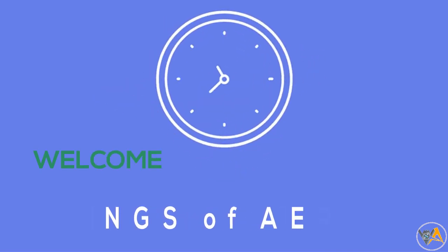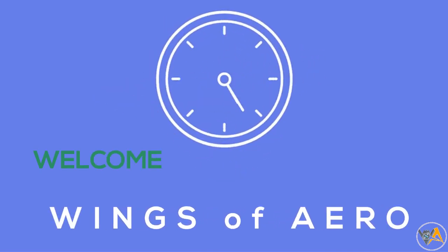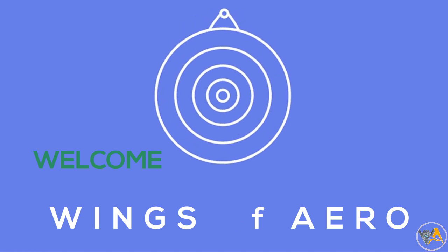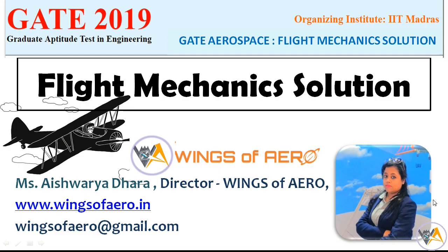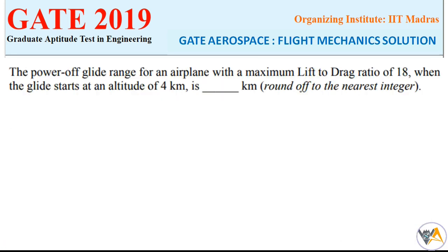Hi followers, welcome to Wings of Arrow. Today in this video we can see flight mechanics solutions which have been asked in the GATE Aerospace Exam 2019. First question: find the glide range of an airplane with a maximum lift-to-drag ratio of 18 when the glide starts at an altitude of 4 kilometers, rounded off to the nearest integer in terms of kilometers.